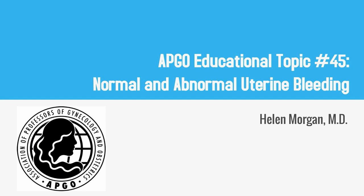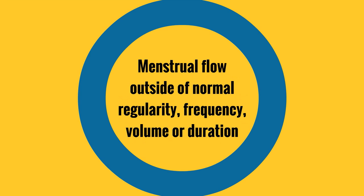Abco educational topic number 45: normal and abnormal uterine bleeding. Abnormal uterine bleeding is menstrual flow outside of normal regularity, frequency, volume, or duration. In the United States, more than 10 million women suffer from abnormal uterine bleeding.